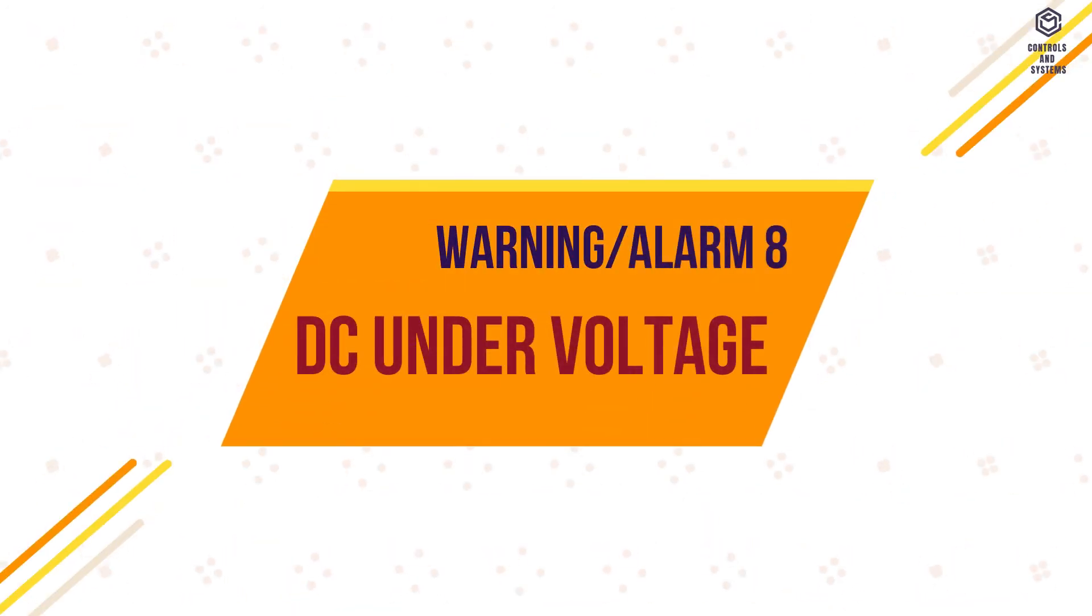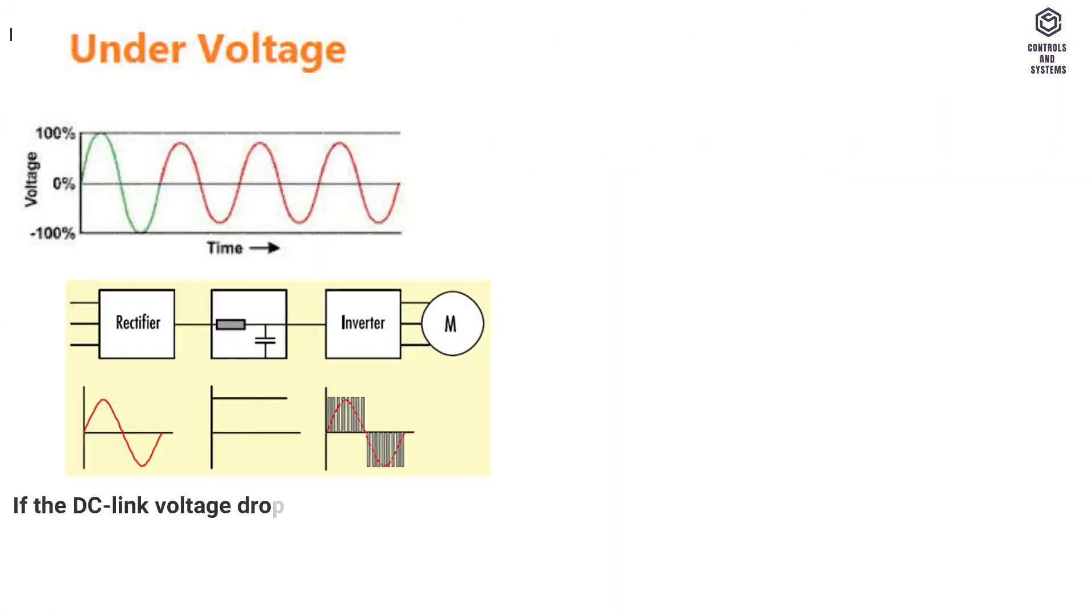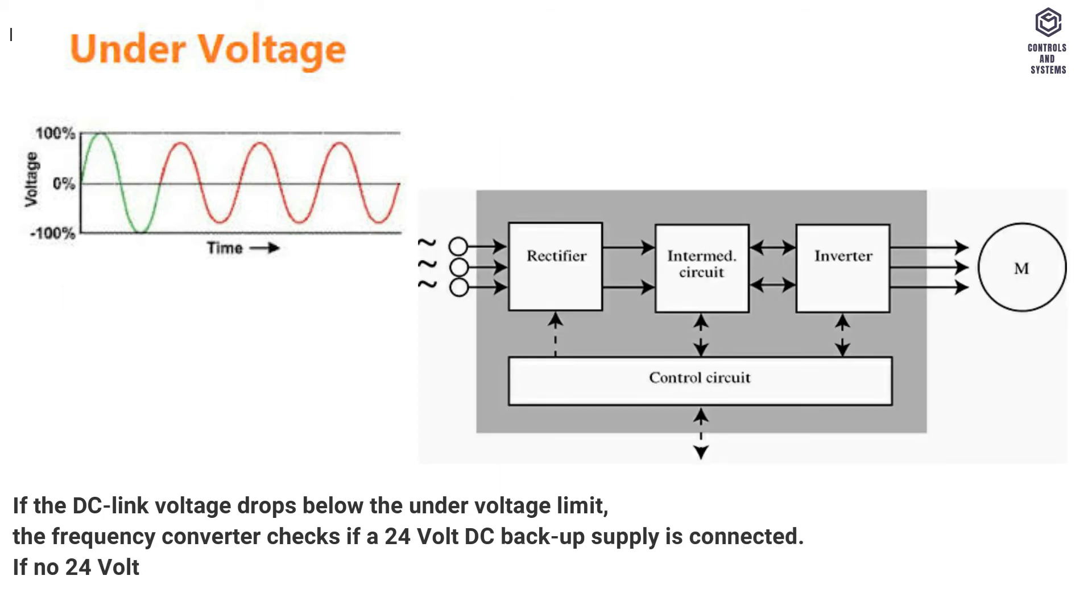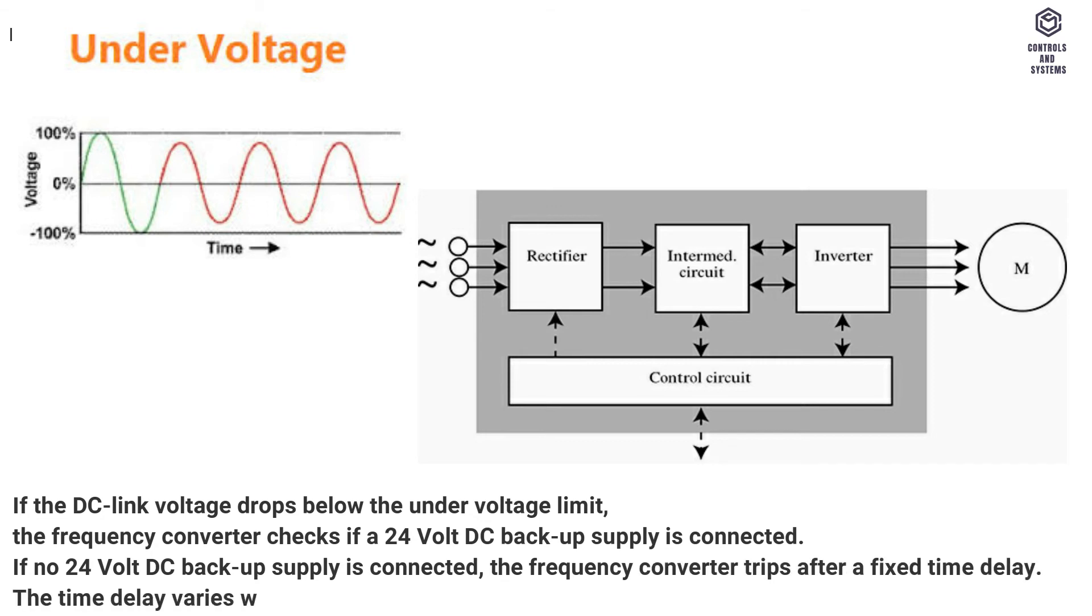Warning, Alarm 8, DC Under Voltage. If the DC link voltage drops below the under voltage limit, the frequency converter checks if a 24 volt DC backup supply is connected. If no 24 volt DC backup supply is connected, the frequency converter trips after a fixed time delay. The time delay varies with unit size.